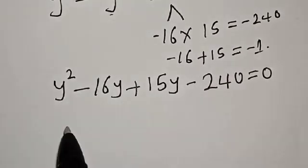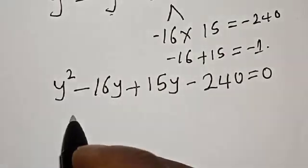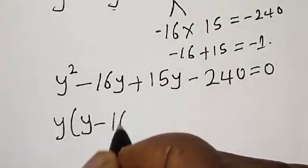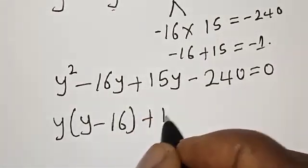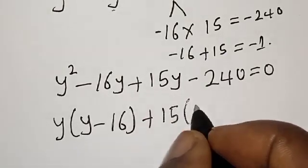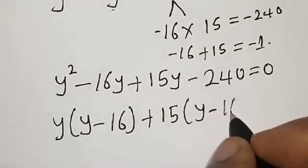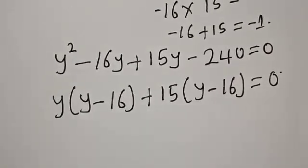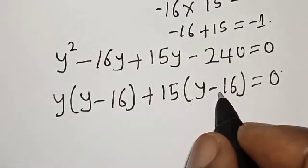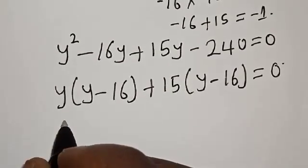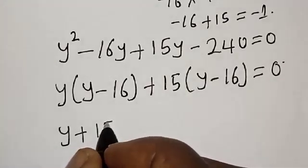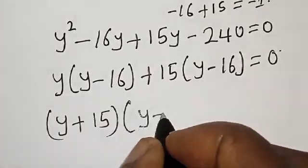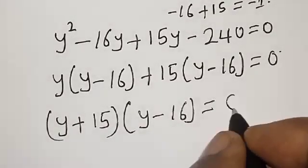Then let's factor. From y squared minus 16y we have y into y minus 16, plus from 15y minus 240 we have 15 into y minus 16, is equal to 0. We have y minus 16 as a common factor, giving us y plus 15 multiplied by y minus 16 is equal to 0.